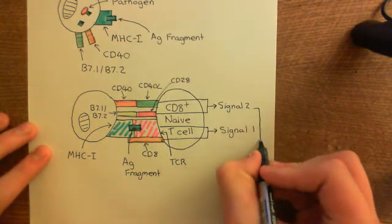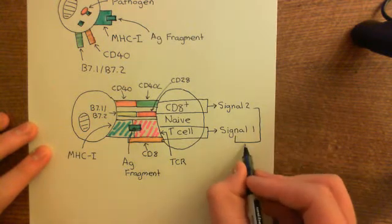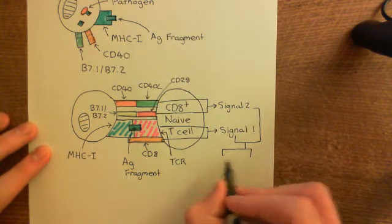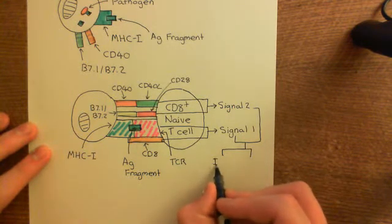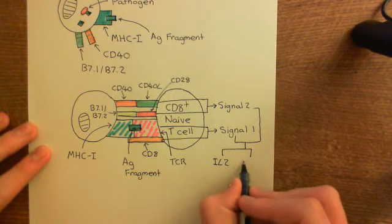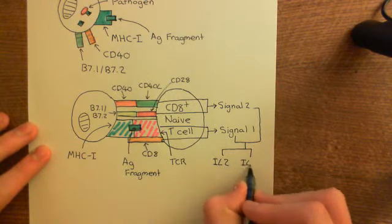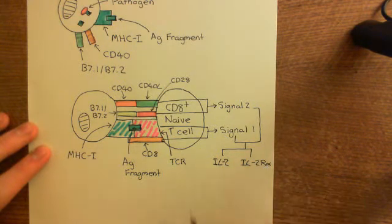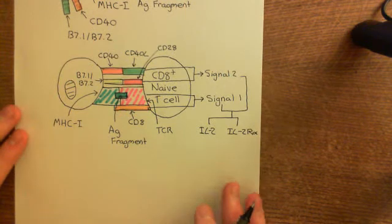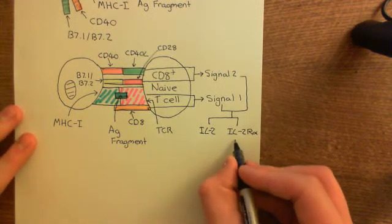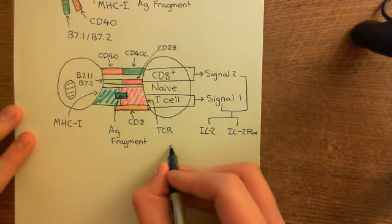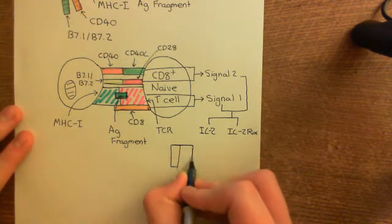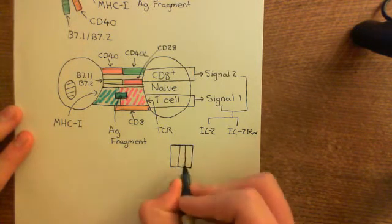Signal 1 and signal 2 together will do exactly the same as they did in the CD4-positive T-cell case. They will induce the production of interleukin-2 and also the interleukin-2 receptor alpha component. The interleukin-2 receptor alpha component will then form the complete interleukin-2 receptor by binding to the beta and gamma components which are already assembled in the cell membrane of the naive CD8-positive T-cell.